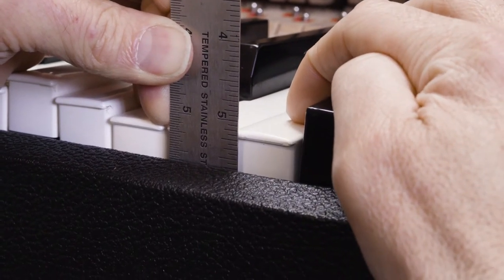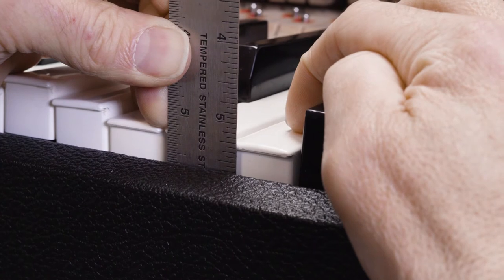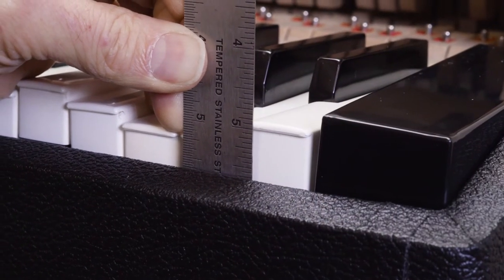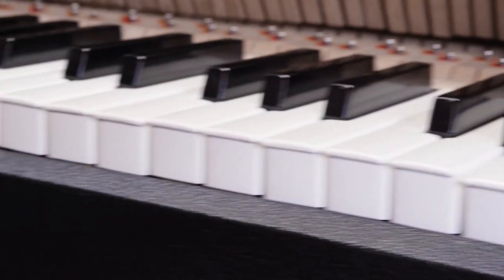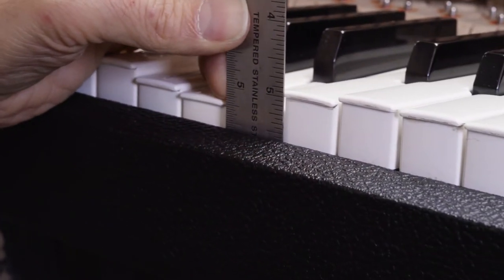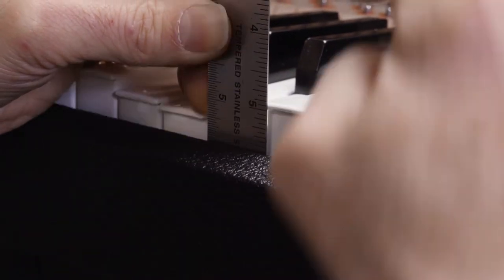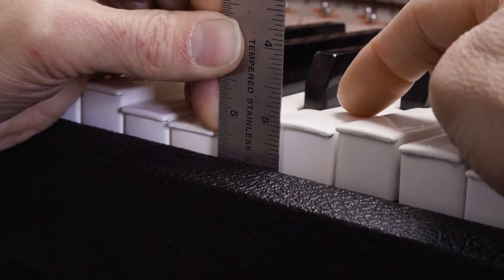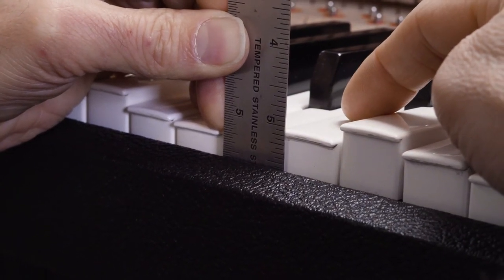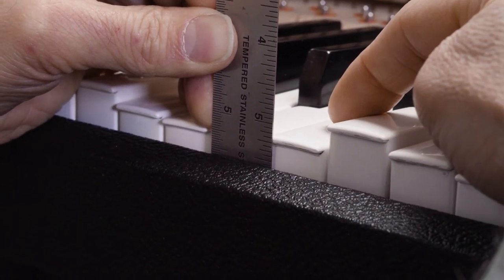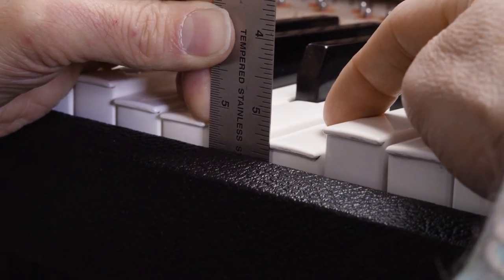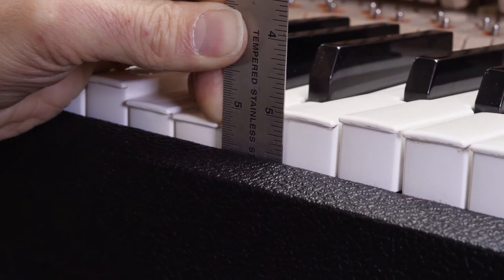So one-eighth, two-eighths, three-eighths which is shy, so we want to increase that. Now if we go to the center one here we're going to see one-eighth, two-eighths, three-eighths and that's a natural three-eighths plus a thirty-second. That's what we want.